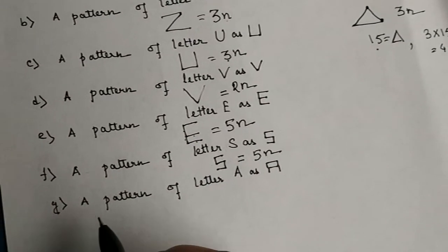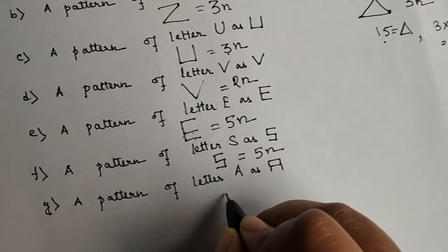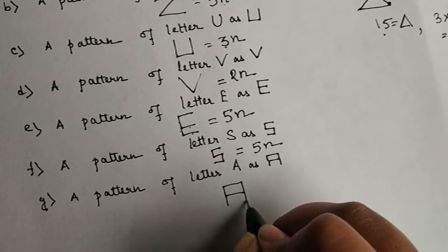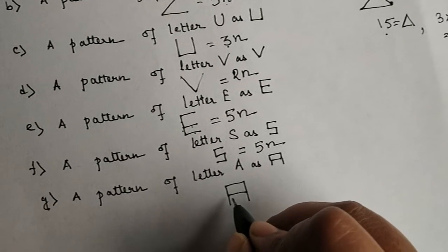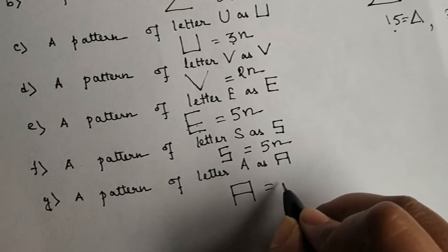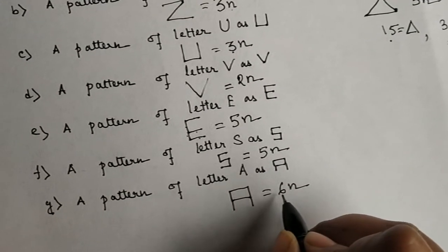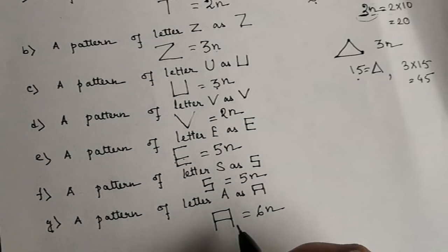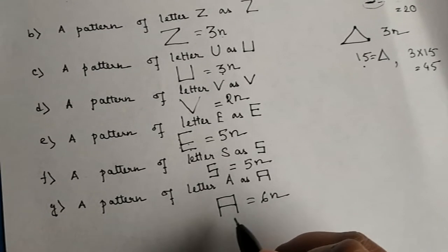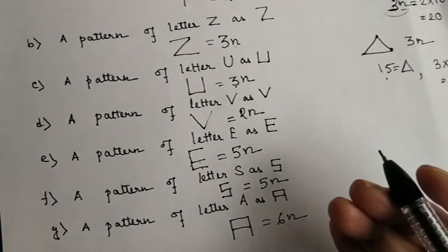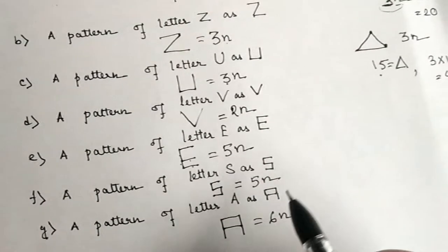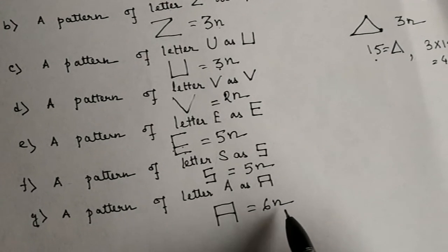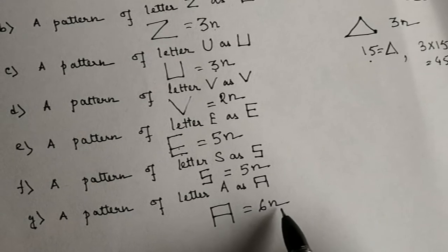Now in the last part, a pattern of the letter A. Here we can see: 1, 2, 3, 4, 5, 6 — total 6 mastics are used in this particular alphabet. So the rule will be 6 into n, where 6 is the number of mastics in one alphabet and n is the number of A's we have. So in this way, we can find the number of mastics in any pattern. Here n is the variable, and n can be anything — 1, 2, 3, 15, anything — that's why it is called a variable.